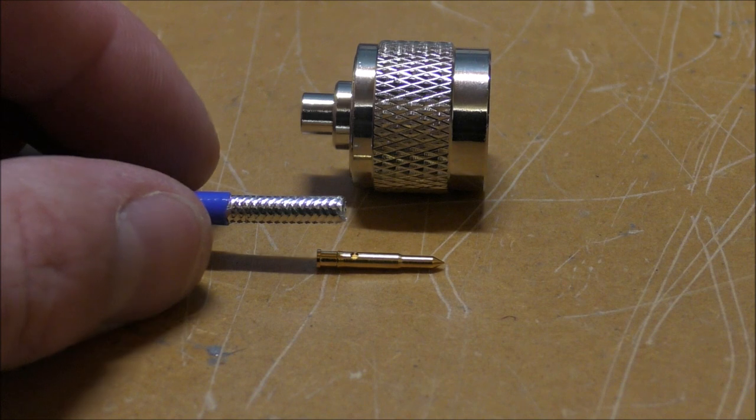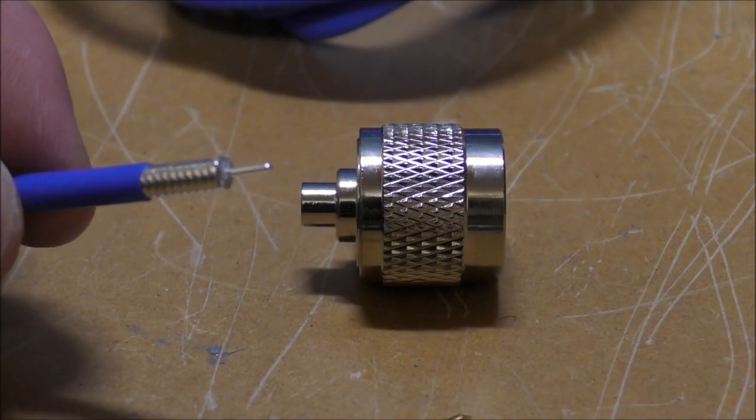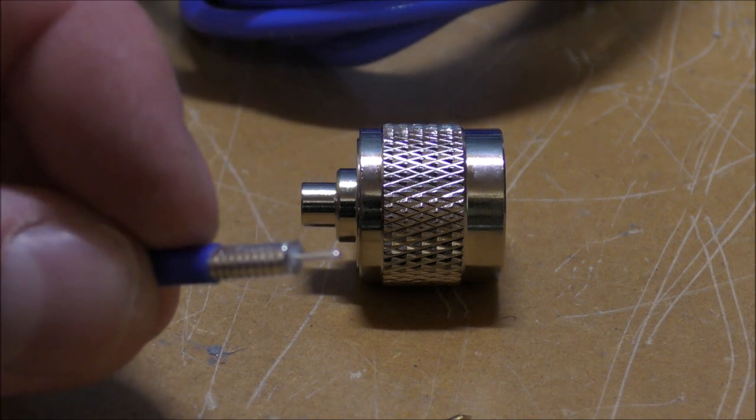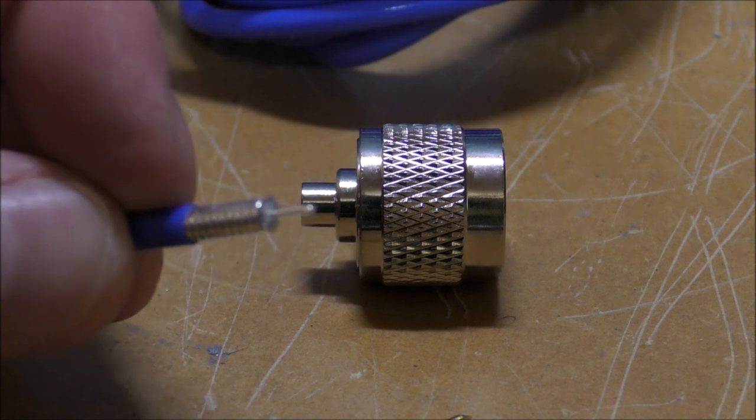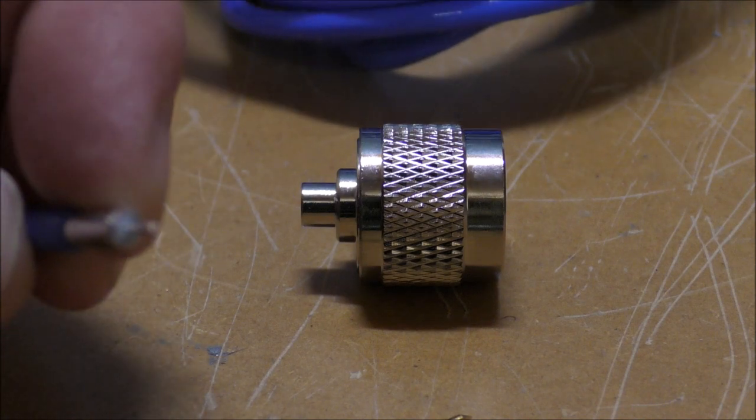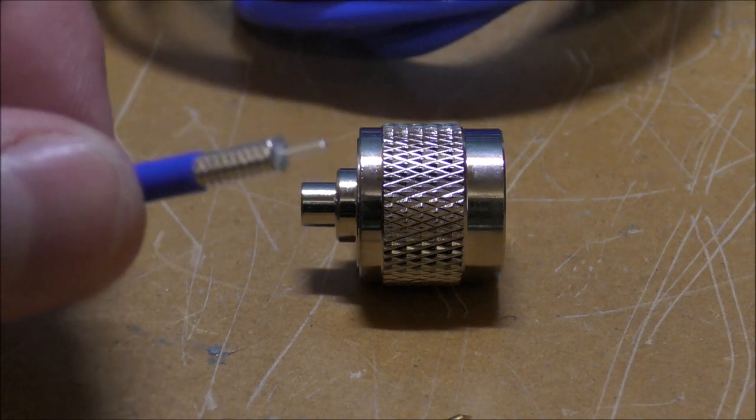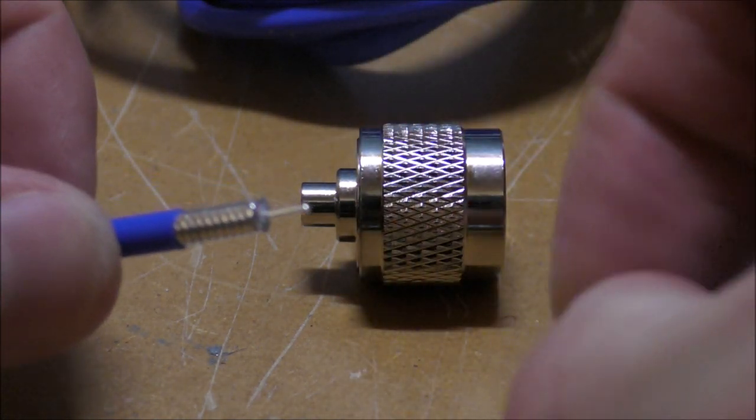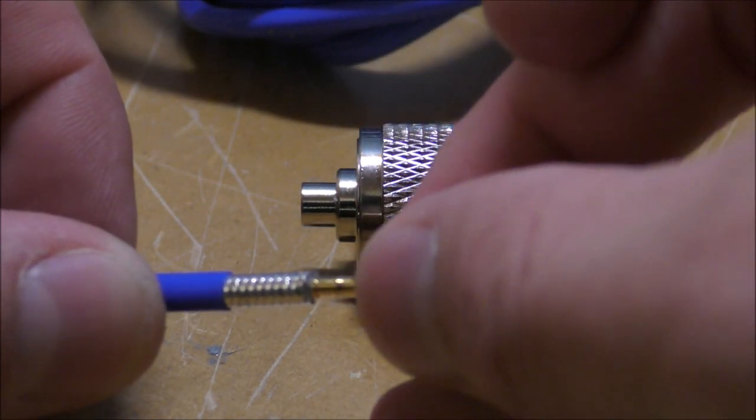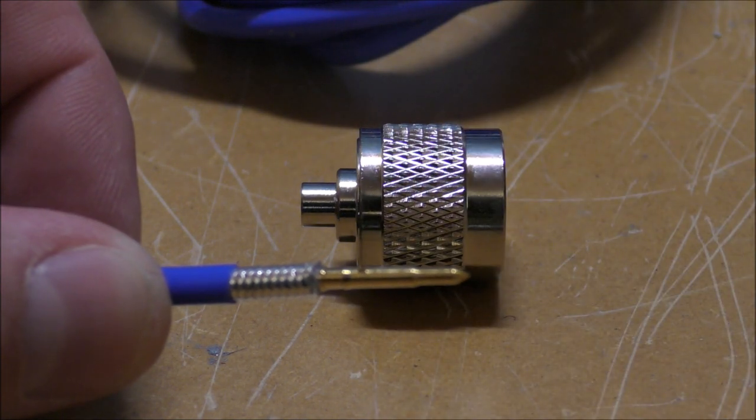So what we'll do is go off and cut that, and through the magic of editing you can see that I've cut that. So we've got our center pin. We want to make sure that the braid is not touching the center pin at all, in this case it's not. And just go ahead and do a test fit over the end now, and we can see that sits quite nicely.